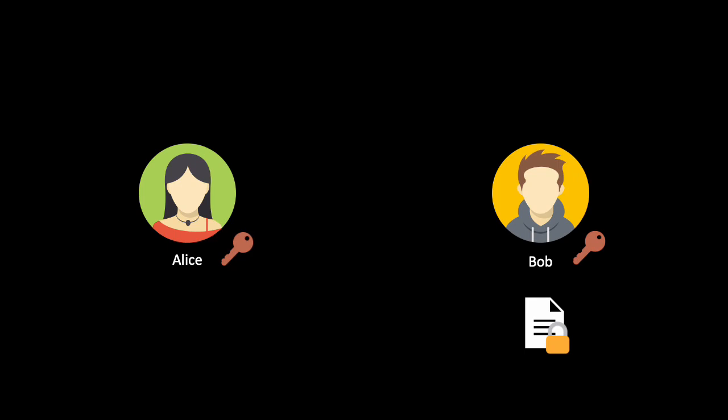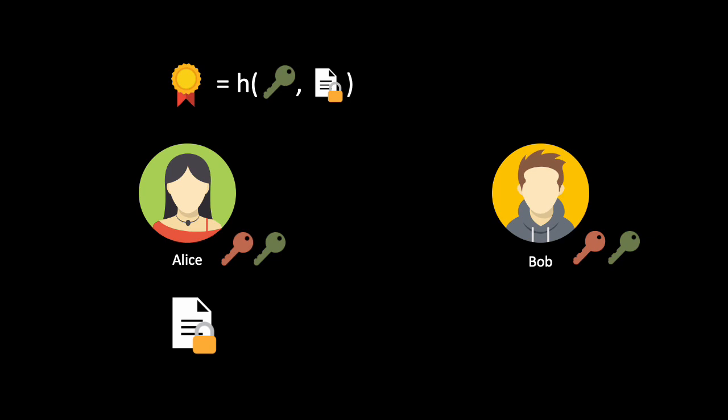Alice can use a MAC to prove the authenticity and integrity of the ciphertext to Bob, and do so more efficiently than when using digital signatures. First, a shared key different from the one used for encryption must be established. Then, by hashing the shared key concatenated with the ciphertext, the message authentication code is computed.